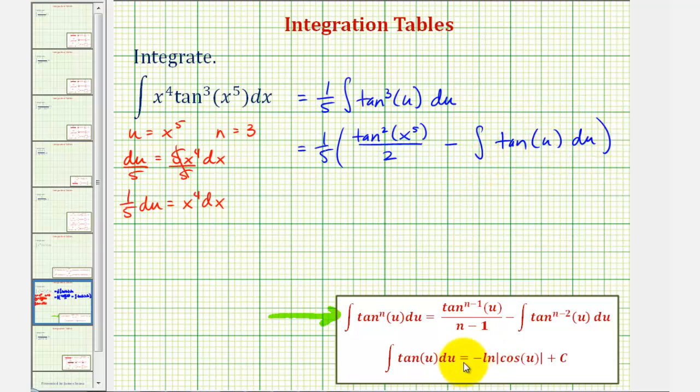The integral of tan(u) equals negative natural log of absolute value cosine u plus C.